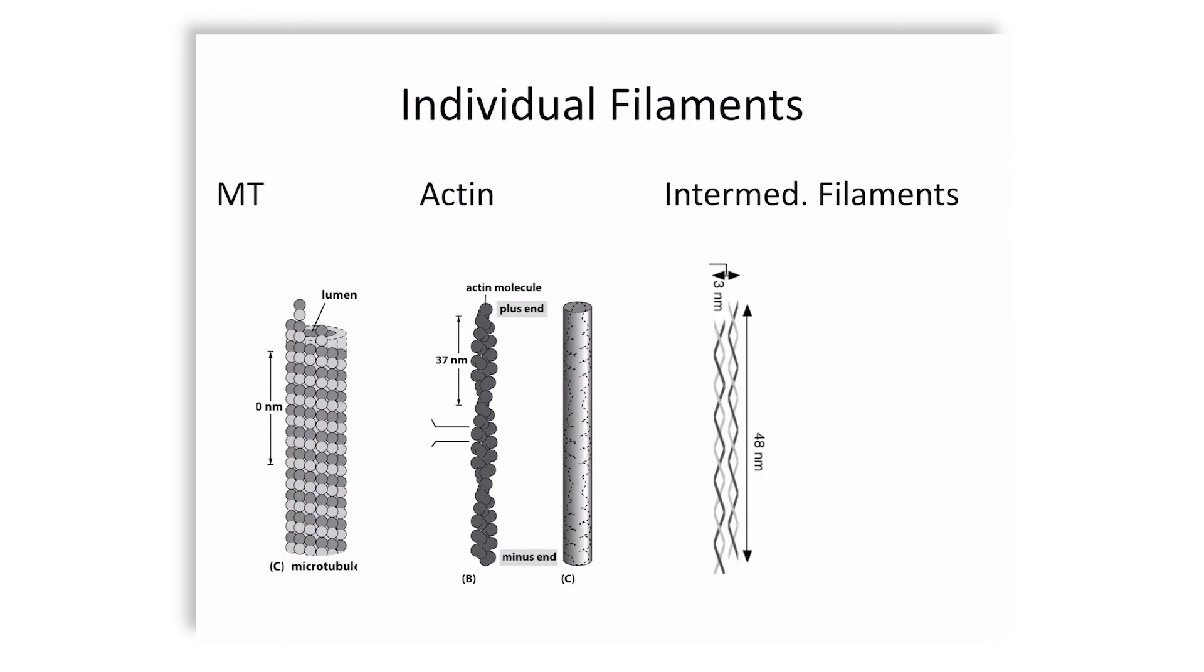Part of the reason for calling them intermediate filaments is historical because the diameter of the actin filaments is the narrowest, the thinnest, five nanometers, 13 protofilaments, 25 nanometers is the diameter of the microtubules, and intermediate filaments are intermediate to these two.